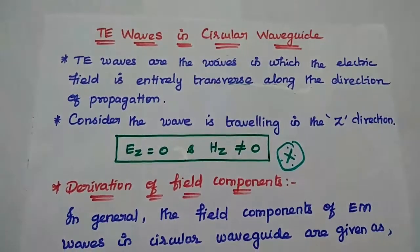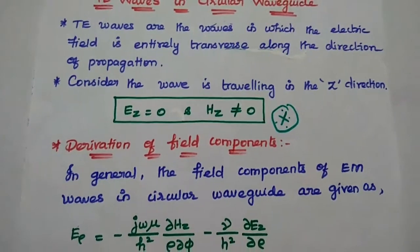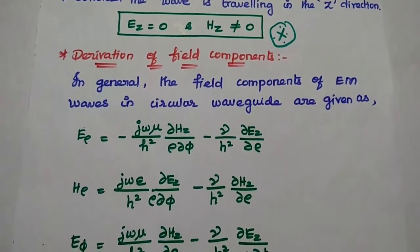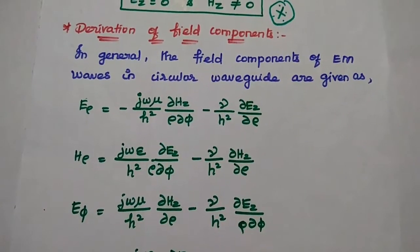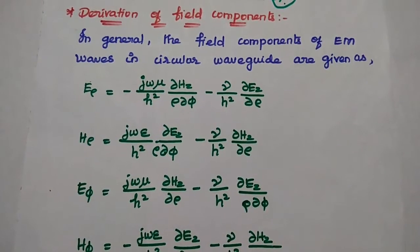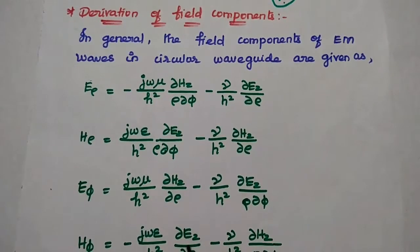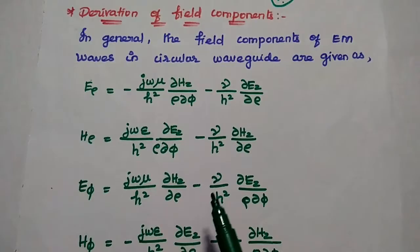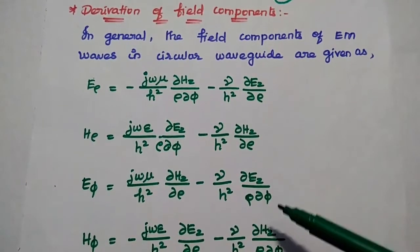Next we are going to derive the field components of TE waves. We have already derived the general field components of electromagnetic waves in circular waveguide in the previous lecture video. You can refer that video for these general field components. In this TE waves derivation, we are going to use these field components directly.